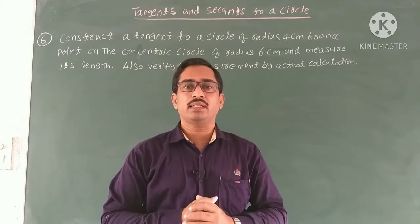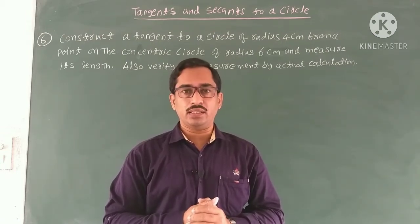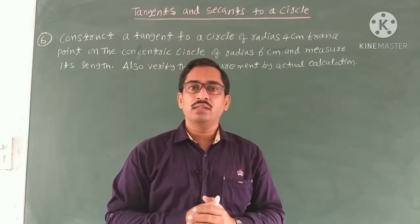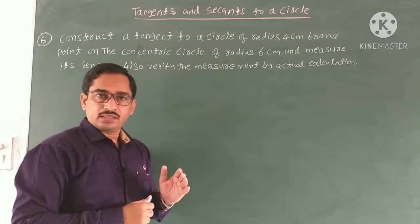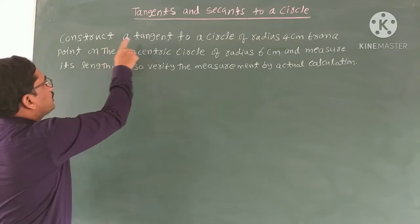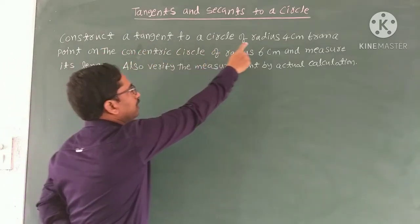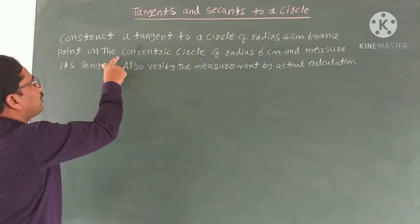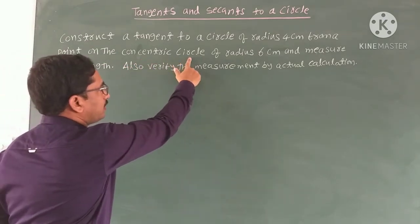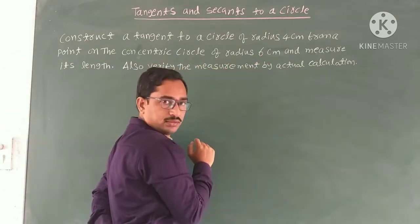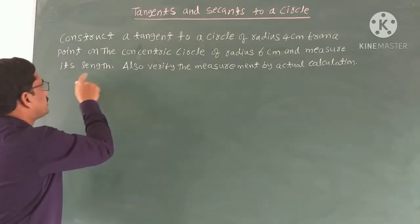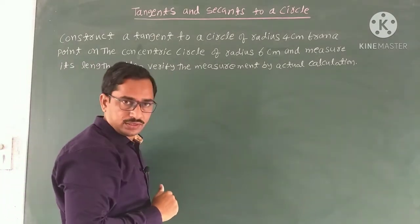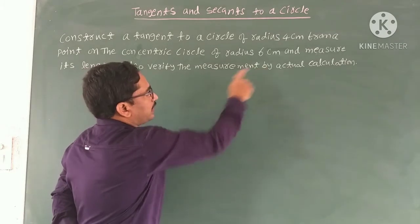In the chapter Secants and Tangents to a Circle, in this session I am going to explain the constructions. The problem is: construct a tangent to a circle of radius 4 cm from a point on the concentric circle of radius 6 cm, measure its length, and verify the measurement by actual calculation.